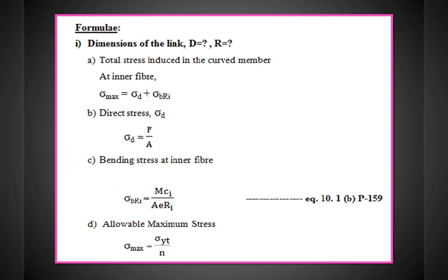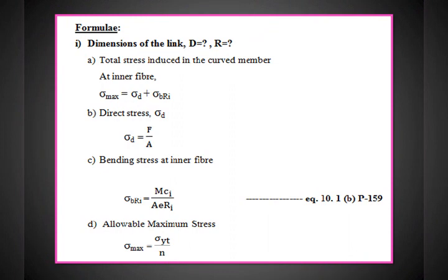Bending stress at the inner fiber uses equation 10.1B (page 159): sigma_B(Ri) = M × Ci / (A × e × Ri). The unknowns needed are: bending moment M, radial distance from neutral axis to inner fiber Ci, cross-section area A, eccentricity e (distance between radius at neutral axis and centroidal axis), and radius at inner fiber Ri. Also, sigma_max = sigma_yt / n (yield stress divided by factor of safety).